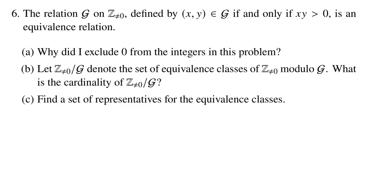And in this one, we're given a relation called G on the non-zero integers, where if you have two non-zero integers, they're related if and only if their product is positive.